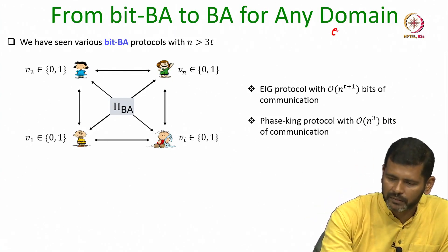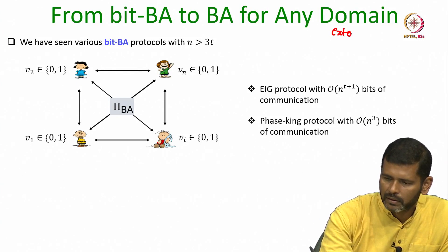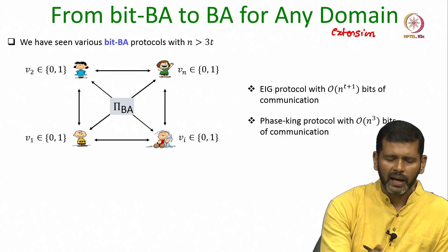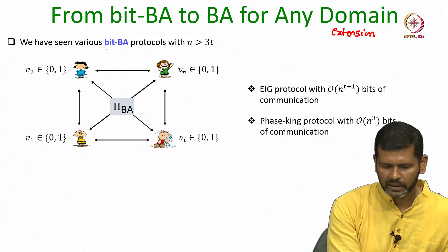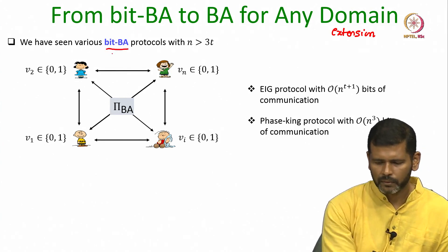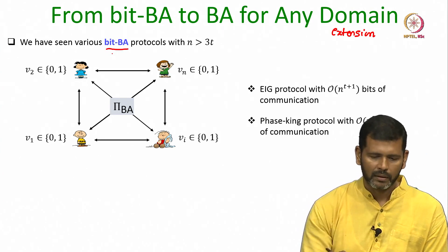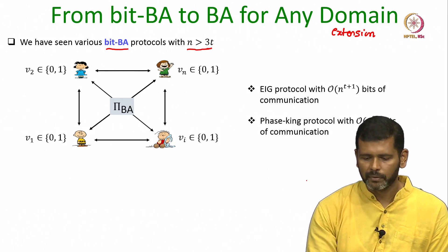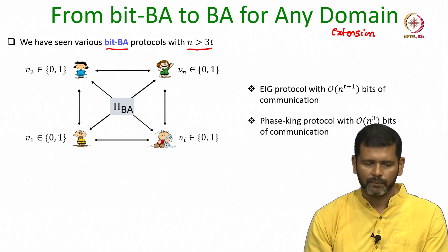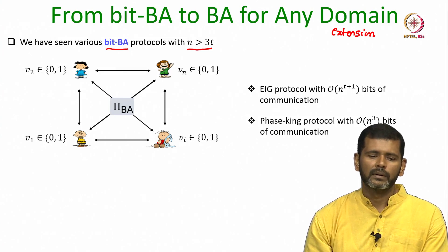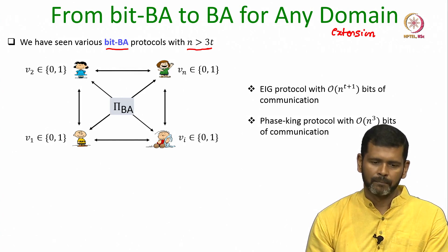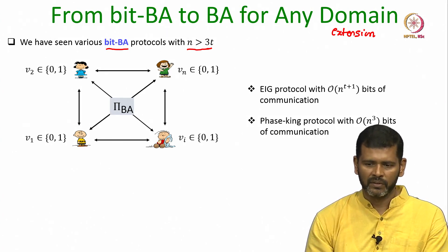What exactly do we mean by domain extension for Byzantine agreement and broadcast? We have seen various Byzantine agreement protocols till now, namely three protocols. If we focus on protocols with n greater than 3T, we have seen two protocols: the EIG protocol and the Phase King 2 protocol, where we assume that the inputs of all the parties is a bit and they want to reach agreement on a bit — that is the very basic setting we have considered.